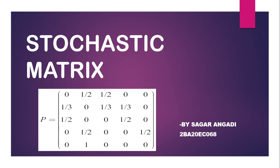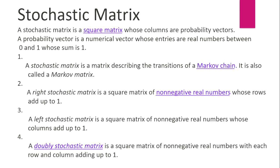Hello friends, today we will discuss the stochastic matrix. A stochastic matrix is a square matrix whose columns are probability vectors. A probability vector is a numerical vector whose entries are real numbers between 0 and 1 whose sum is 1.